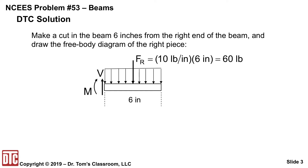Since they're asking for the shear at a particular point on the beam — 18 inches from the left support, which means 6 inches from the right end of the beam — you could just make a cut there at 6 inches and look at just the right piece.